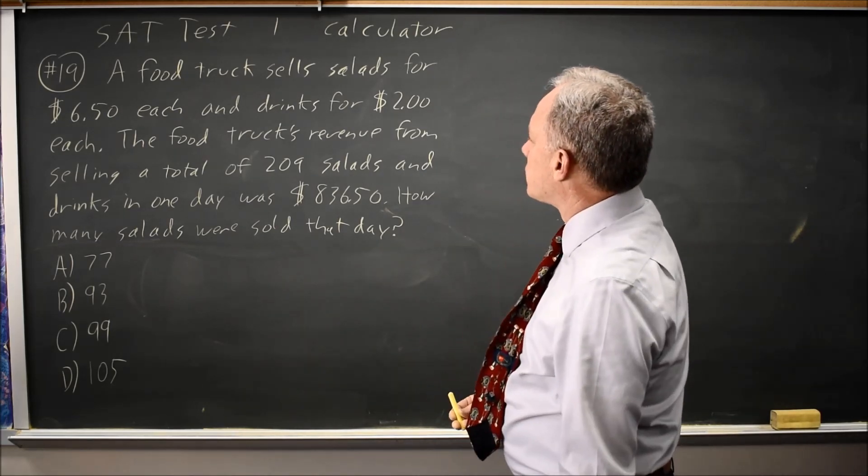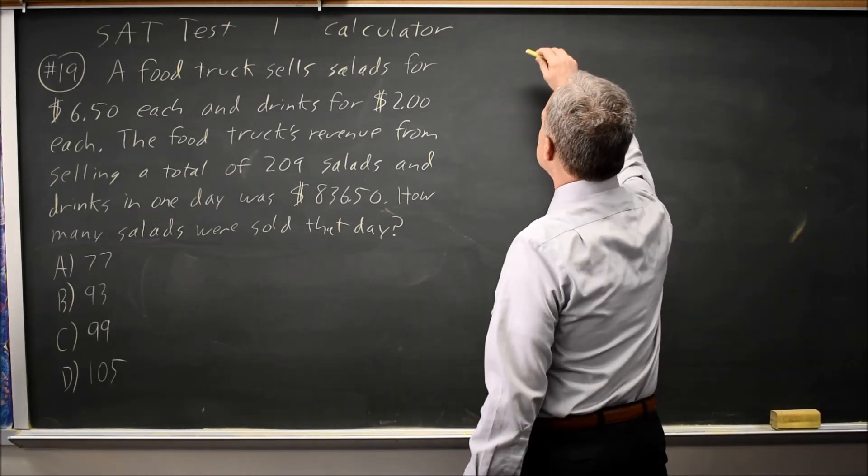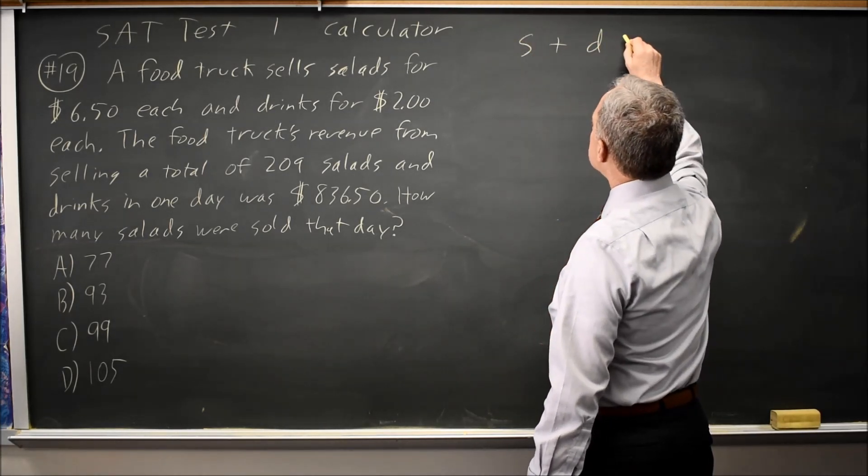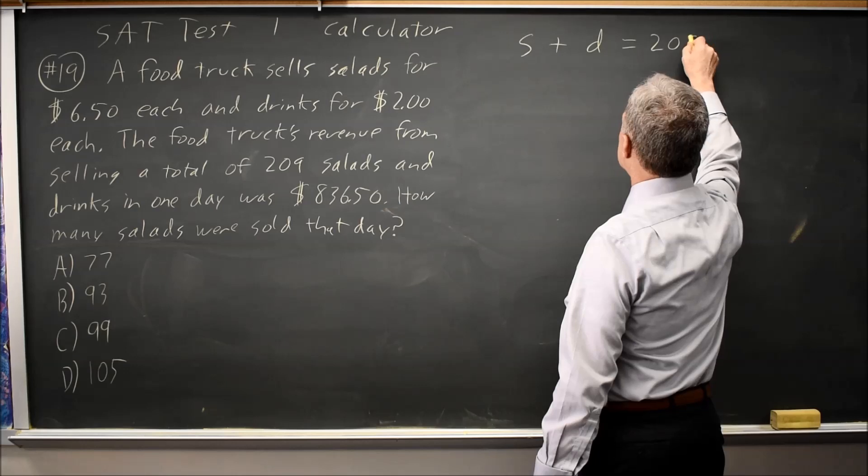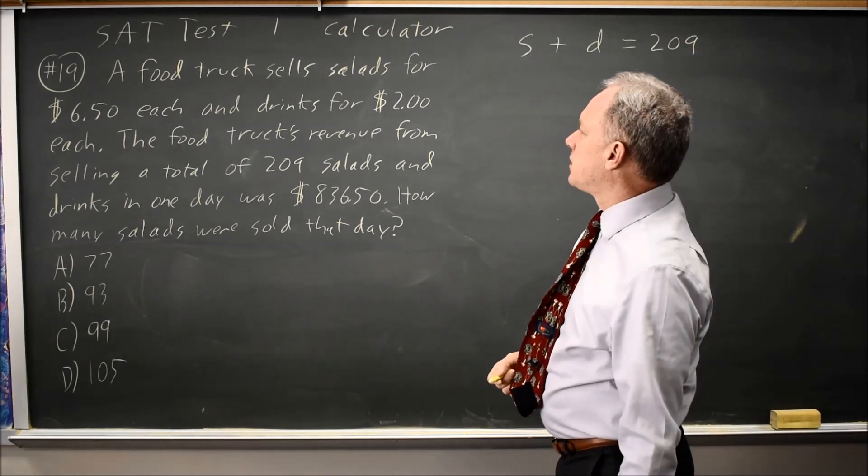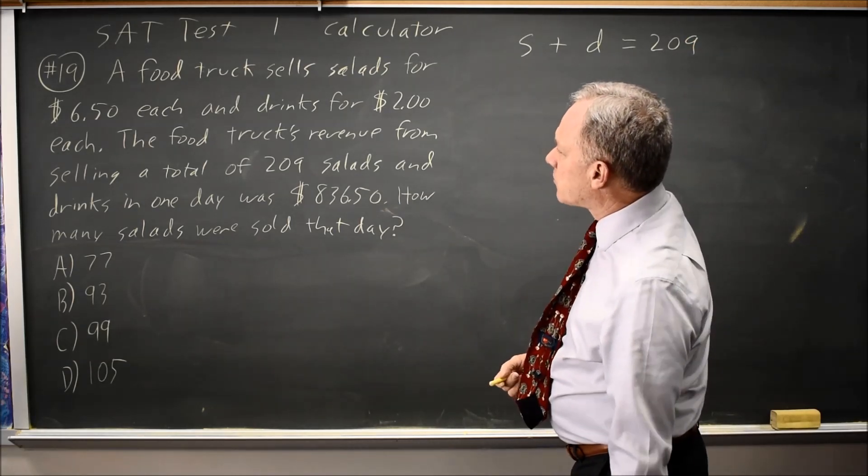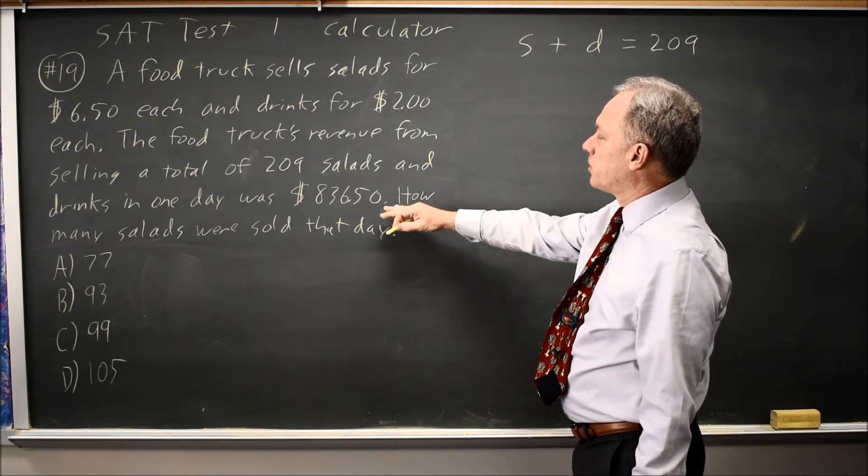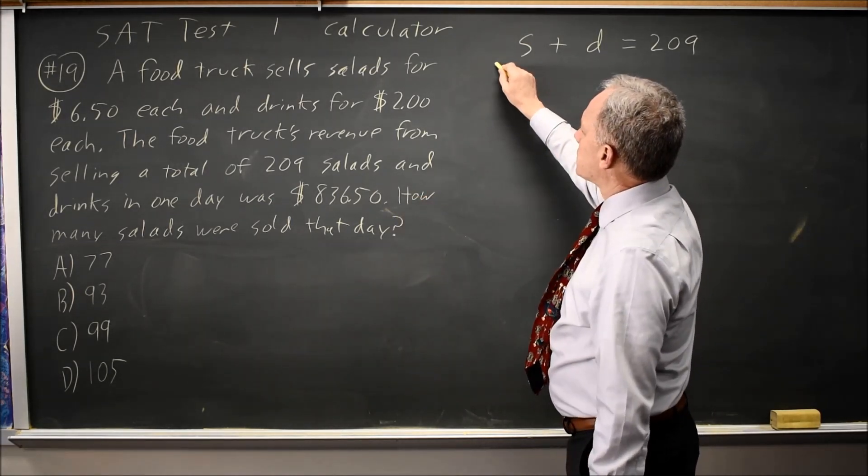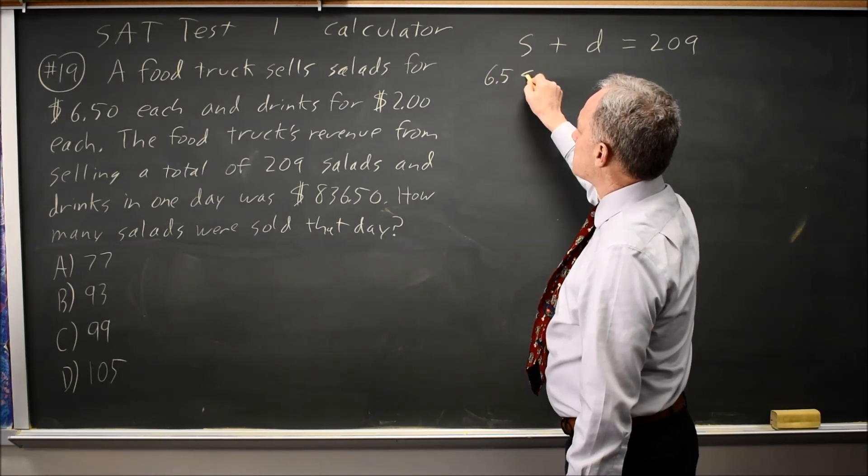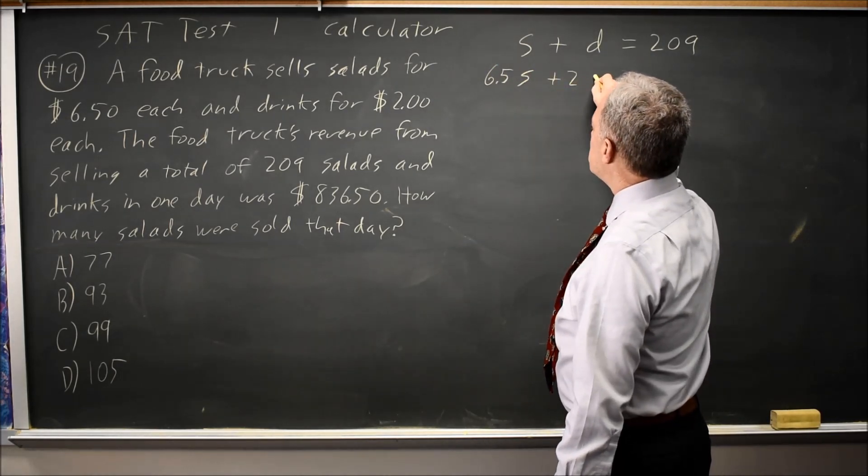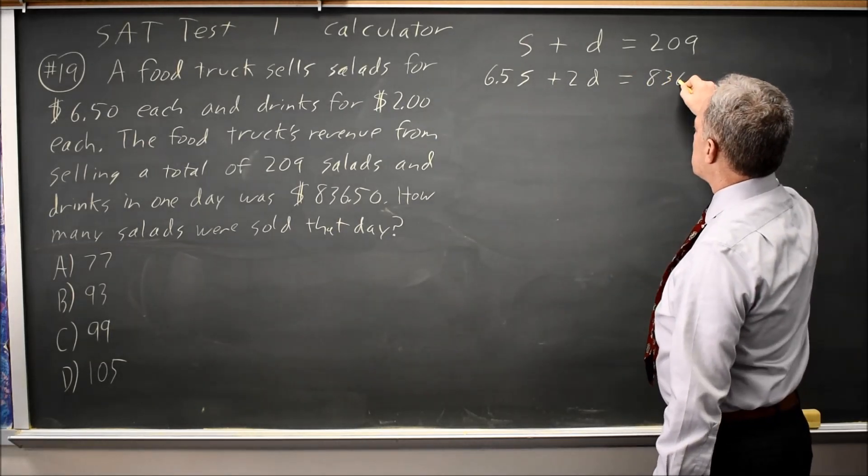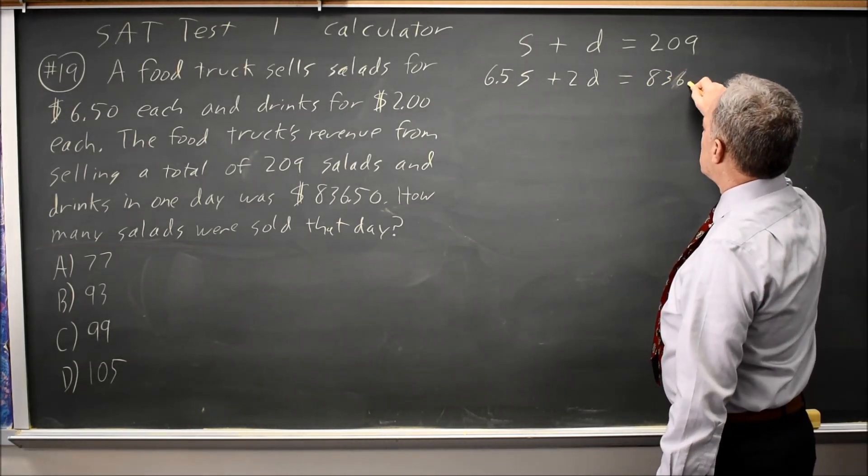The total of 209 salads and drinks, so using S for the number of salads and D for the number of drinks, that's saying S plus D equals 209. They also say that the salads sell for $6.50 each and the drinks for $2, and the total sales were $836.50. So that's 6.5S plus 2D equals 836.50.